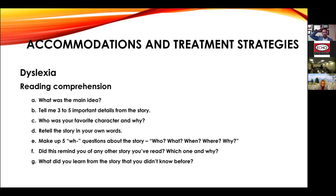For reading comprehension, once reading accuracy and fluency are addressed, we ensure children are also comprehending what they read. We ask who, what, when, where, and why questions about what they're reading, because after years of focusing on accuracy, we don't want them to only focus on that — we want them to see the forest for the trees. After accuracy and fluency are up to par, we ensure comprehension is also developing.